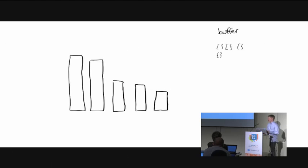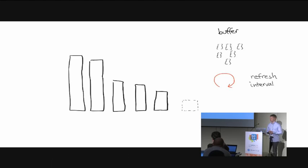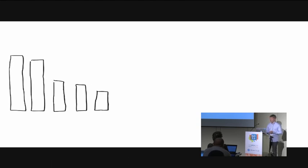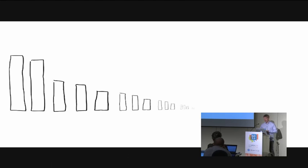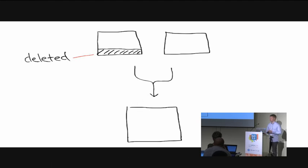Segments get created in one of two ways. As you index new documents, Elasticsearch buffers them and then every refresh interval — which defaults to every second — it writes a new segment and those documents become available for search. Over time you'll get lots of segments, so every now and then Elasticsearch merges them together. During this process, deleted documents are finally completely removed. That's why adding documents can cause the index to be smaller — it can trigger a merge which causes more compaction.